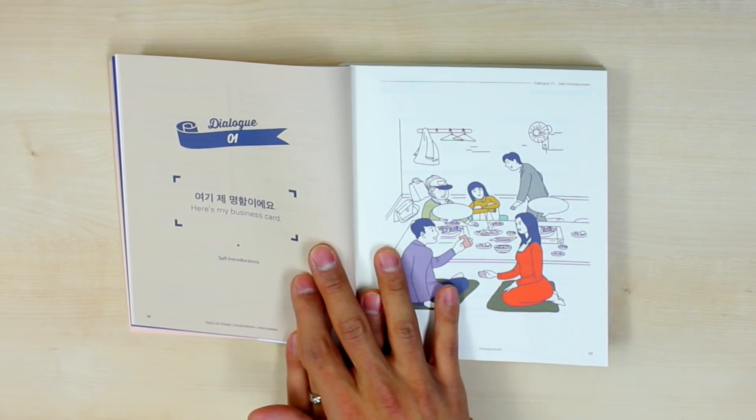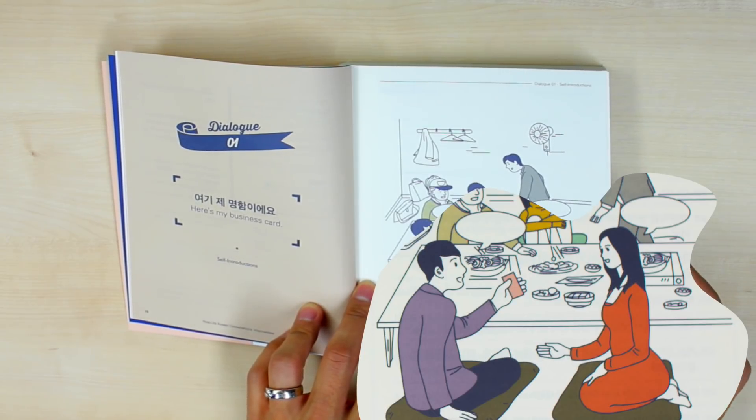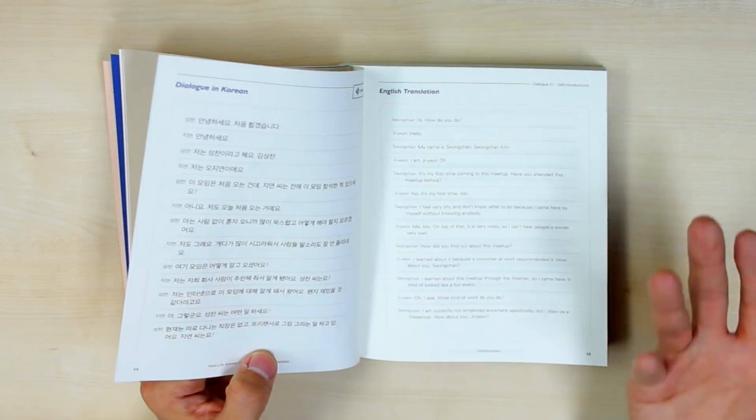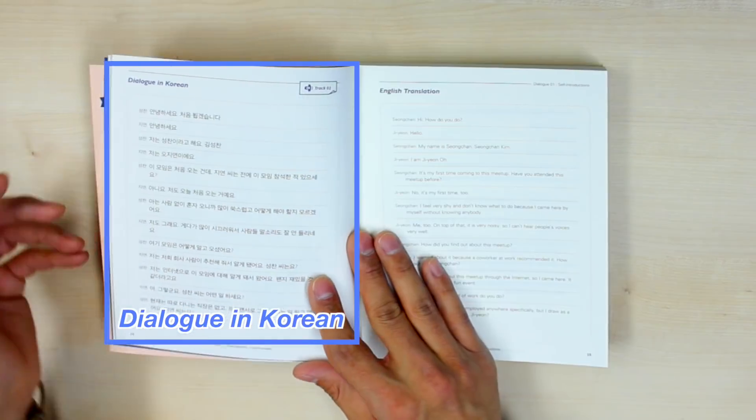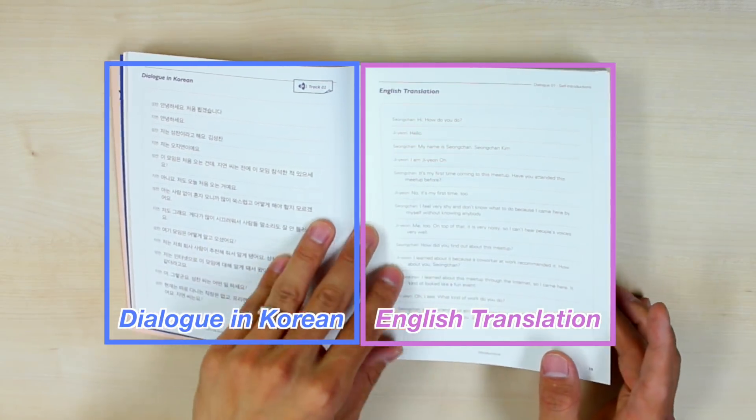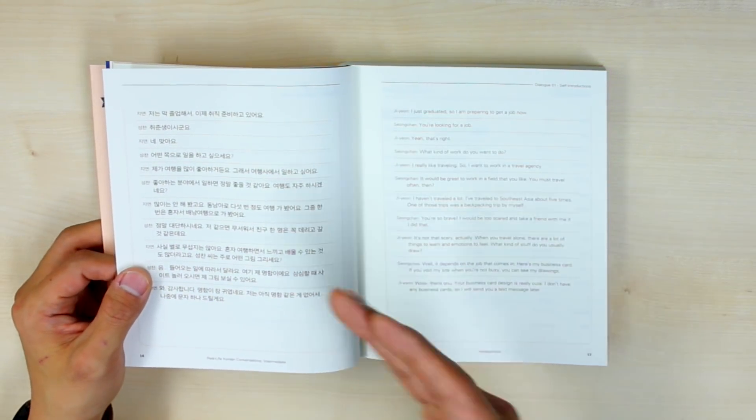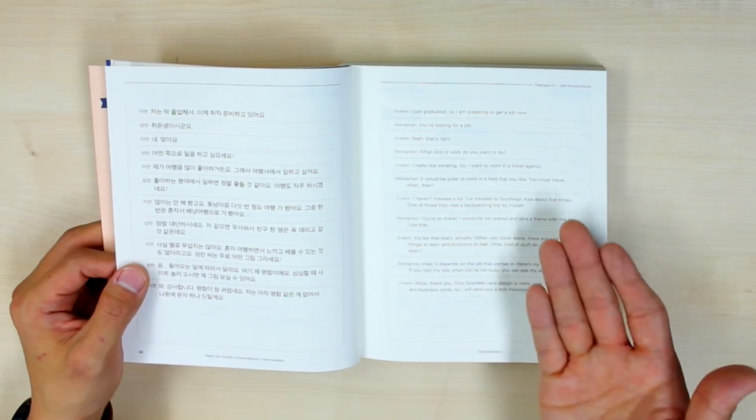We have a situation where you are exchanging business cards. 명함 in Korean. You are exchanging 명함. 명함을 교환하고 있어요. And then you have this conversation. You follow everything line by line along with the English translation here on the right-hand page. And then you read everything. Of course, you can already learn a lot from this.